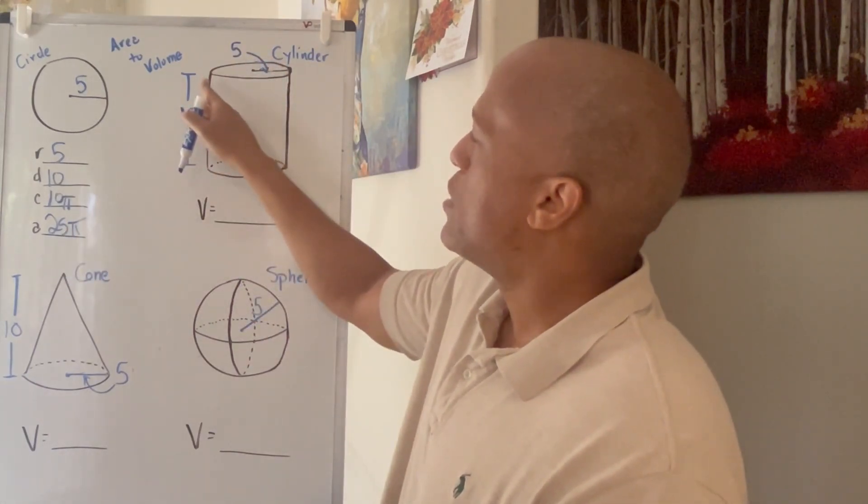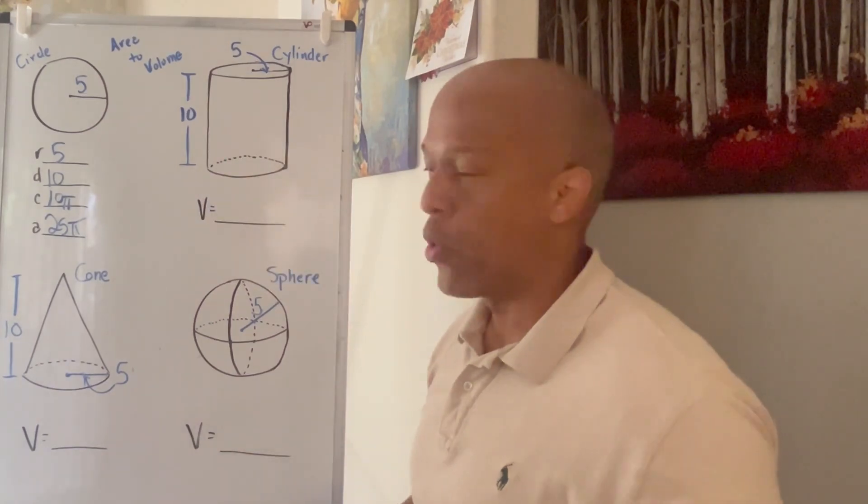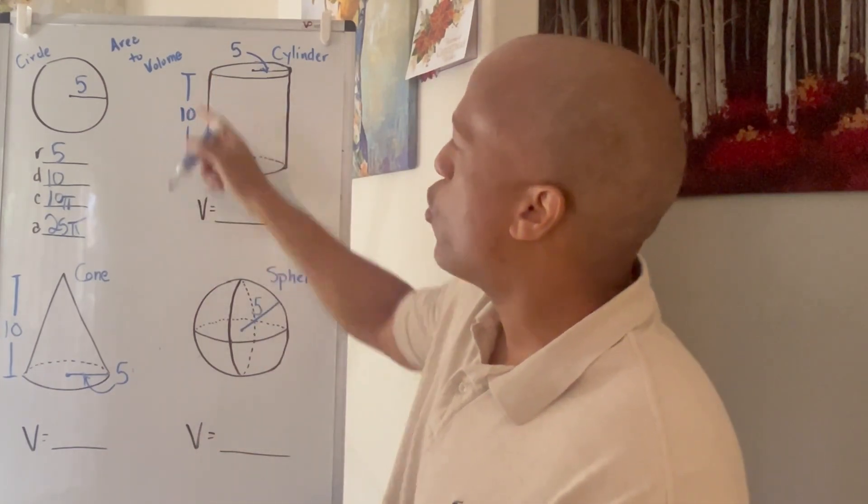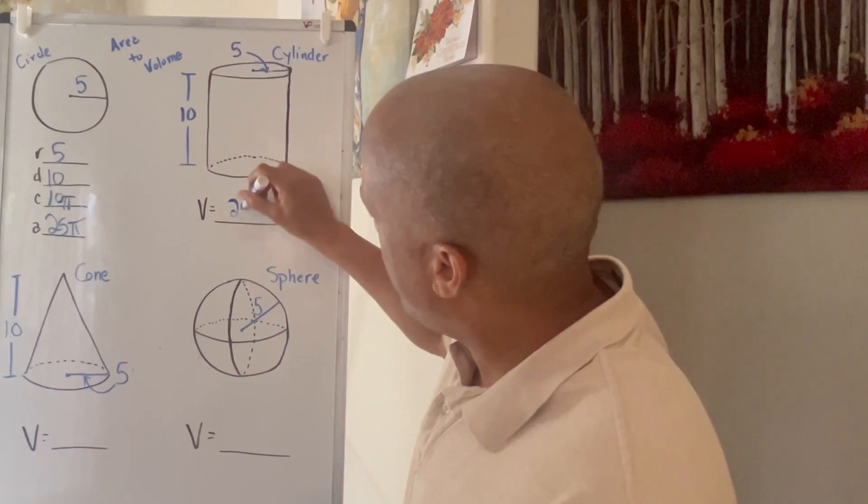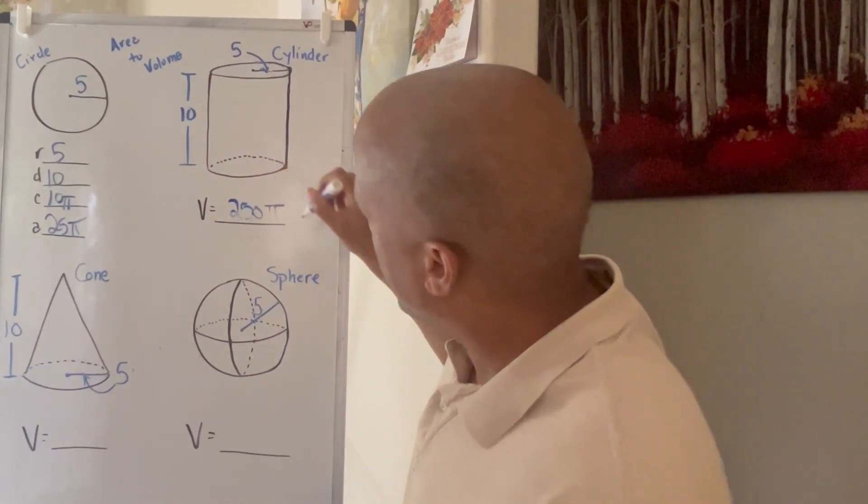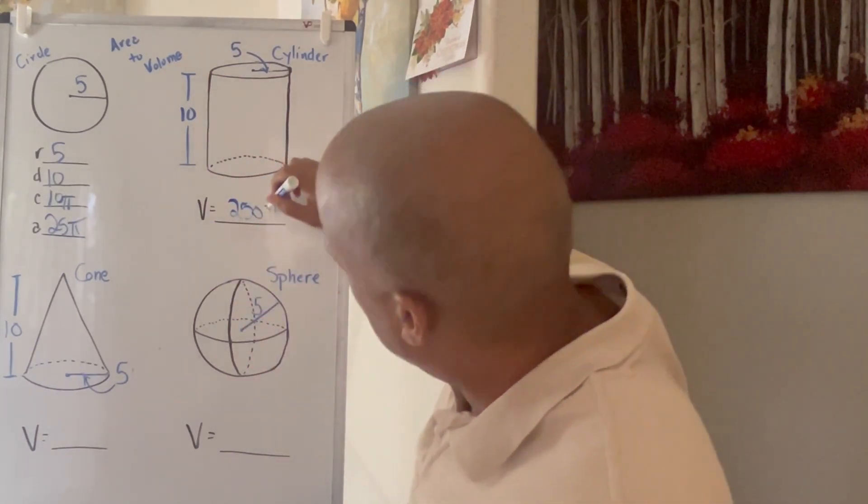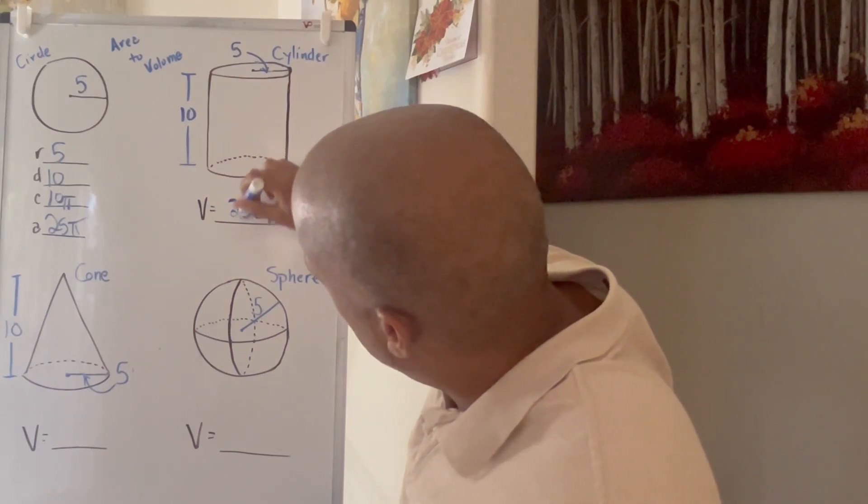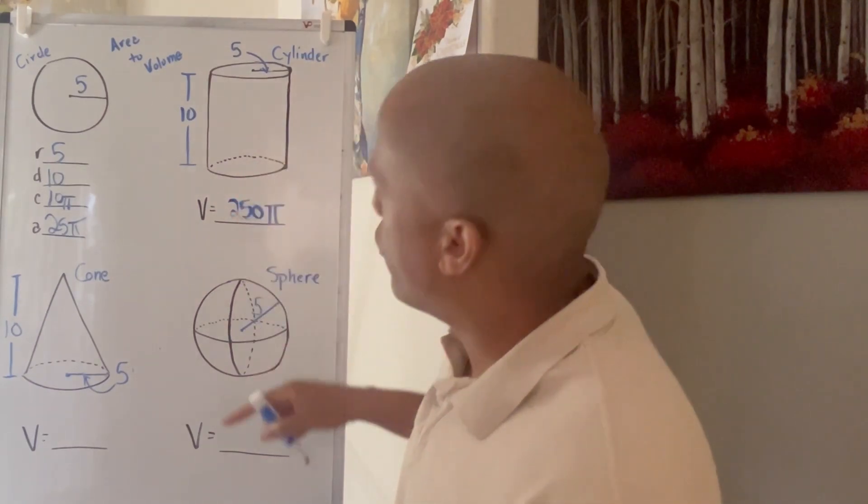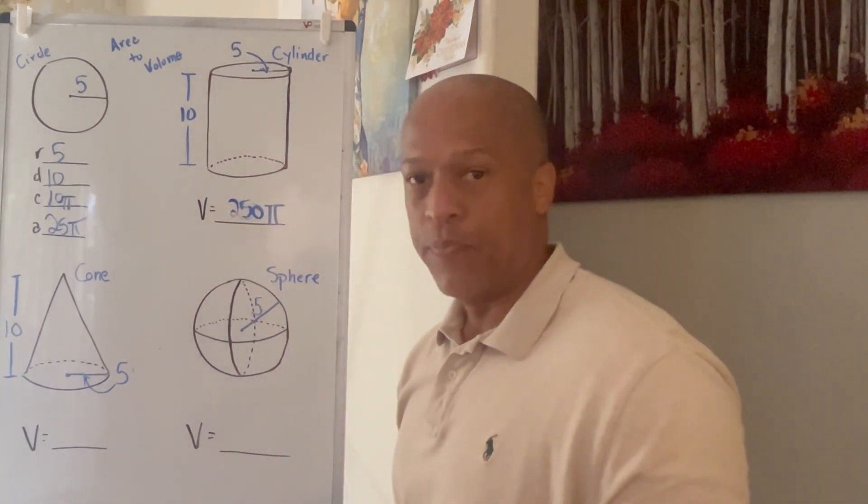What I want to do is stack that area up just like a stack of quarters. So if I have 10 quarters stacked up, I made the numbers real simple. We'll just have 250 times pi. Okay. Hopefully we can see that. Let's make it a little darker so we can see it. 250 times pi, then will be my volume for the cylinder.